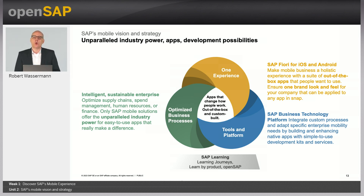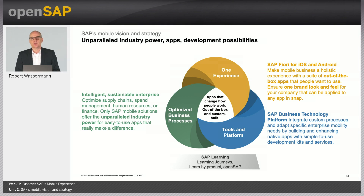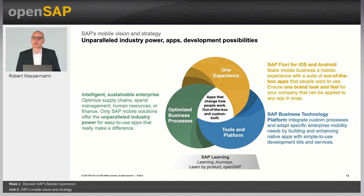We combine SAP's unparalleled industry power with a seamless mobile experience that people want to use to enable business anywhere, offering a user experience that conveys what people love about consumer devices to the business world, using the best of what's possible with native device and app features. One cohesive mobile portfolio across all SAP solutions, whether a customer adopts SAP apps out-of-the-box or builds their own apps using SAP technology, features optimized for critical business processes that strengthen supply chain resilience, workforce performance, and financial steering. SAP also provides holistic learning resources, like SAP Learning Journeys, Learn by Product, and OpenSAP, to help our customers transfer the required knowledge and skills quickly and efficiently.